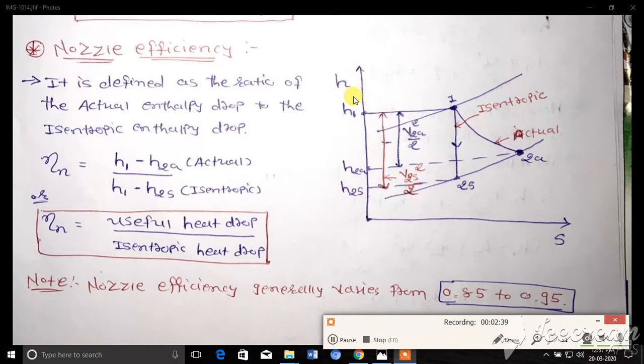Here we have one diagram: H against S, that is enthalpy versus entropy diagram. We can see point 1, that is enthalpy at inlet, and H2S, that is enthalpy at the outlet or exit. We have two processes: 1 to 2S represents the isentropic process, and 1 to 2 represents the actual process.